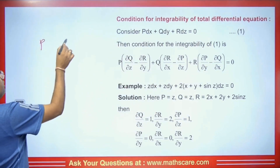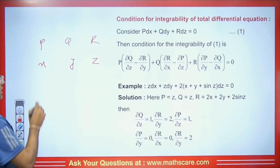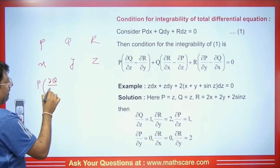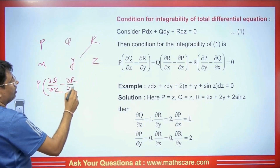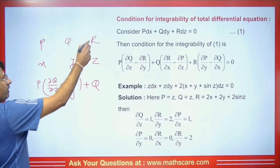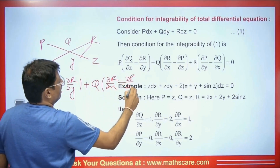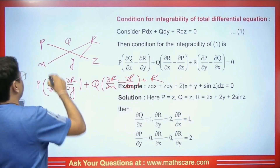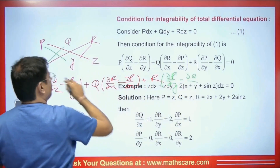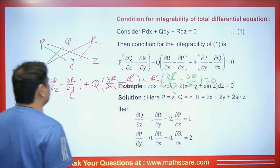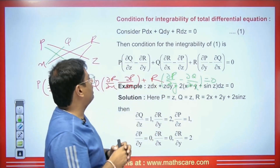Write P, Q, R across the top and x, y, z below. To remember the integrability condition: multiply P by (del Q/del z minus del R/del y), plus Q by (del R/del x minus del P/del z), plus R by (del P/del y minus del Q/del x) equals zero. If this condition is satisfied — meaning its value becomes zero — then the total differential equation is integrable.